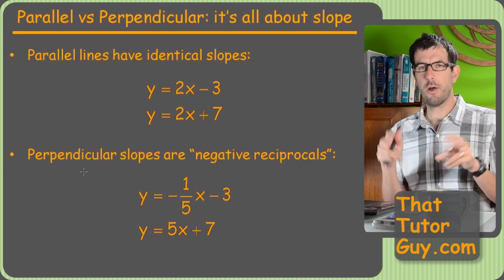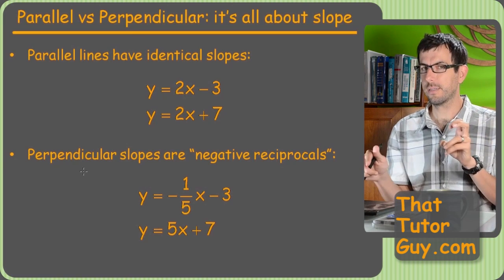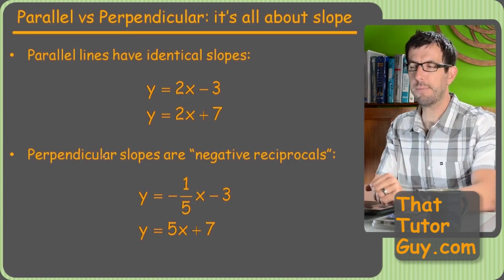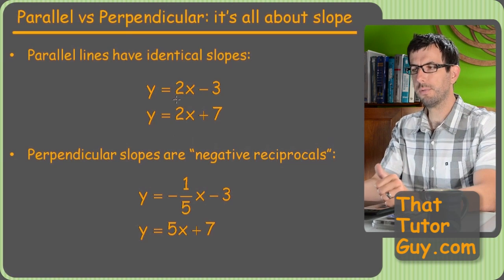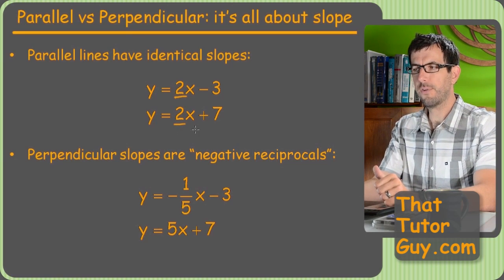And your teacher might even call them normal lines because for some reason normal means 90 degrees for some mathematic types. But here we go. So the trick is that parallel lines have identical slopes.